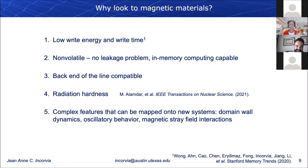There's a large plethora of people working on this problem, but why magnetic materials in particular? They have fairly low write energy and write time compared to other emerging resistive memory elements. They're non-volatile, which reduces leakage and makes them compatible with in-memory computing. They're back-end-of-line compatible, have radiation hardness, and are exciting for new directions like space computing. They also have complex features — domain wall dynamics, oscillatory behavior, and magnetic stray field interactions — that can be mapped onto new computing systems.